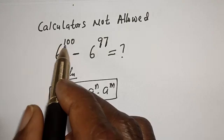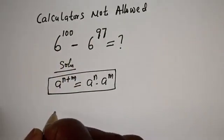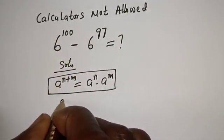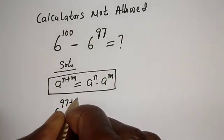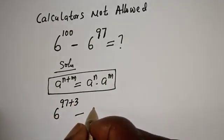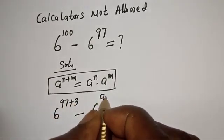Then 6 raised to power 100 can be written as 6 raised to power 97 plus 3, minus 6 raised to power 97.